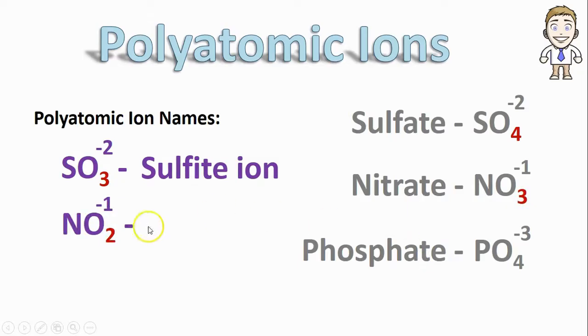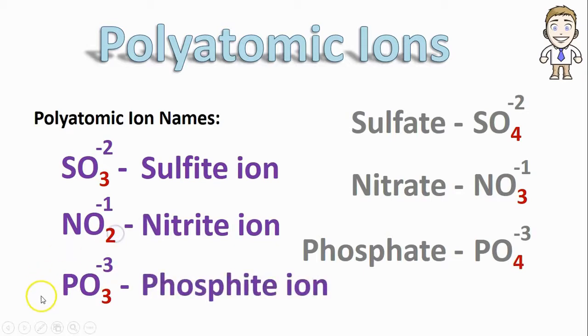NO2 minus one, because it has one less oxygen, is called nitrite and PO3, instead of phosphate, is called phosphite.